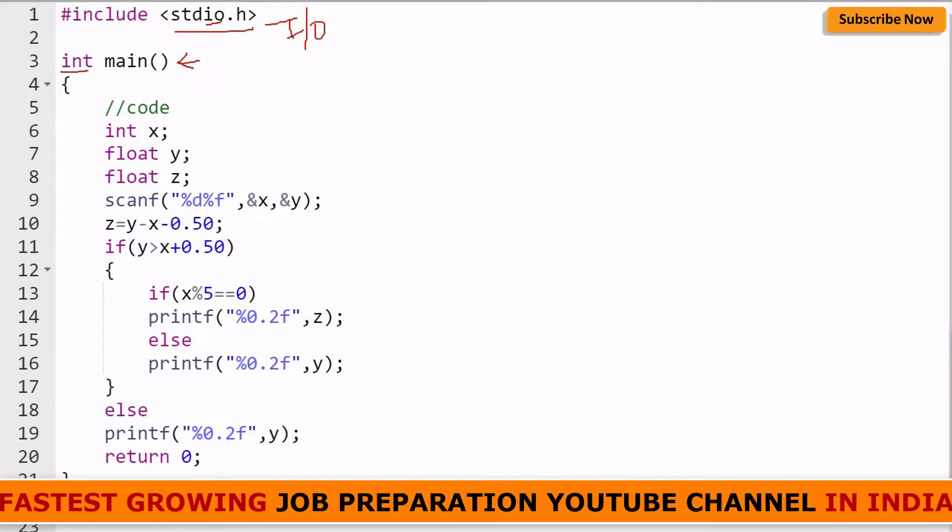From here our main starts and it is an integer return type. The first line of the main is int x. I have taken a variable x of integer data type because we know that x is always a multiple of 5, so it has to be a whole number. Next I have initialized variables y and z in float data type because it was mentioned in the question.